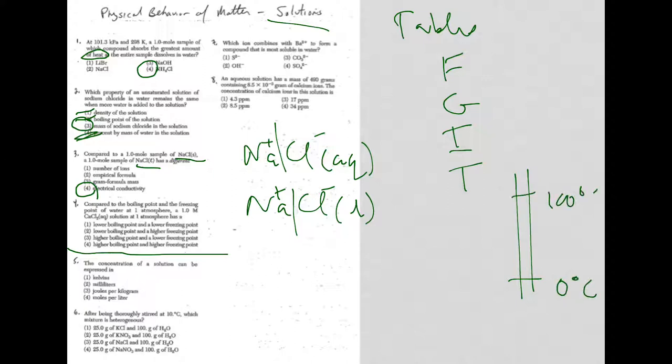And what ends up happening is, when I don't have pure water anymore, and I have something dissolved in it, that solution will boil higher than 100, and it'll also freeze lower than zero. Well, I'm looking again for higher boiling point, lower freezing point, which is choice three. Check out part two of solution questions. Keep working hard, and good luck.